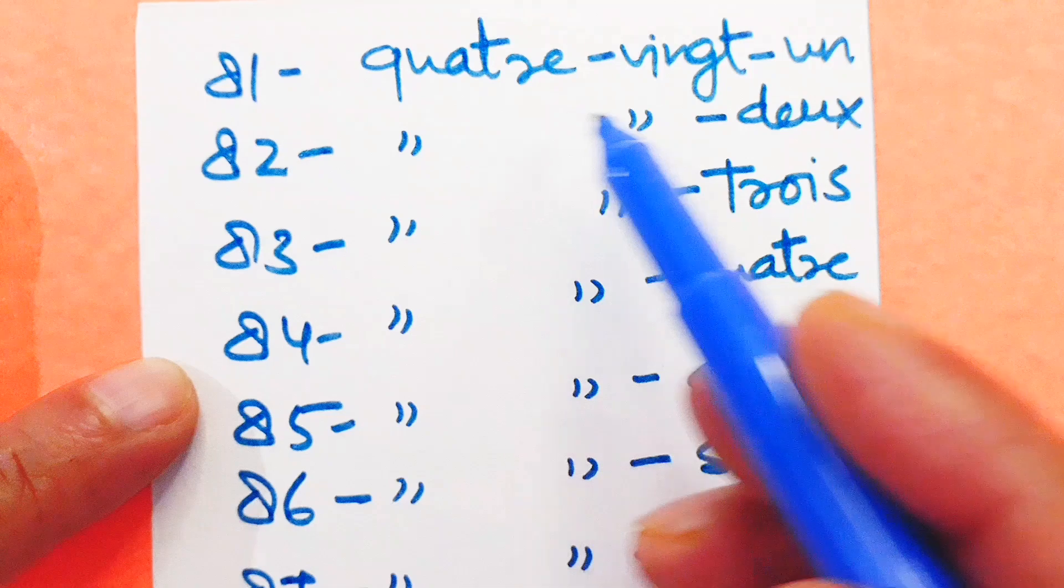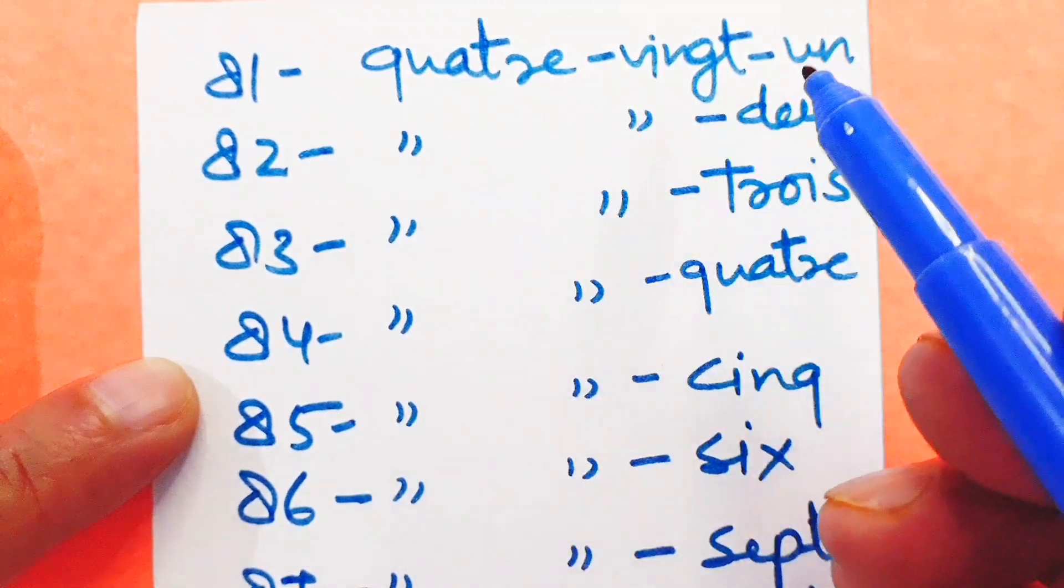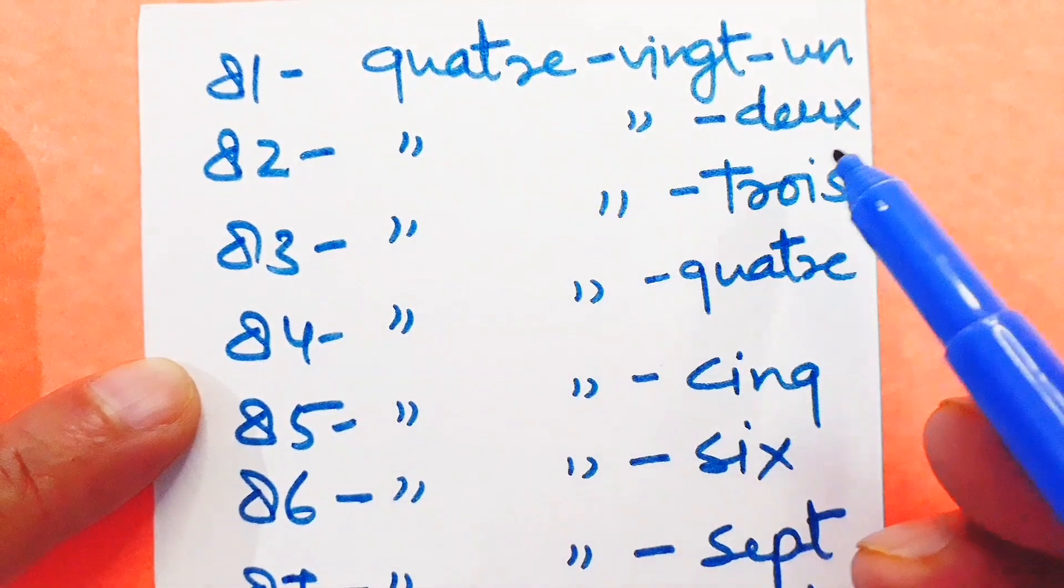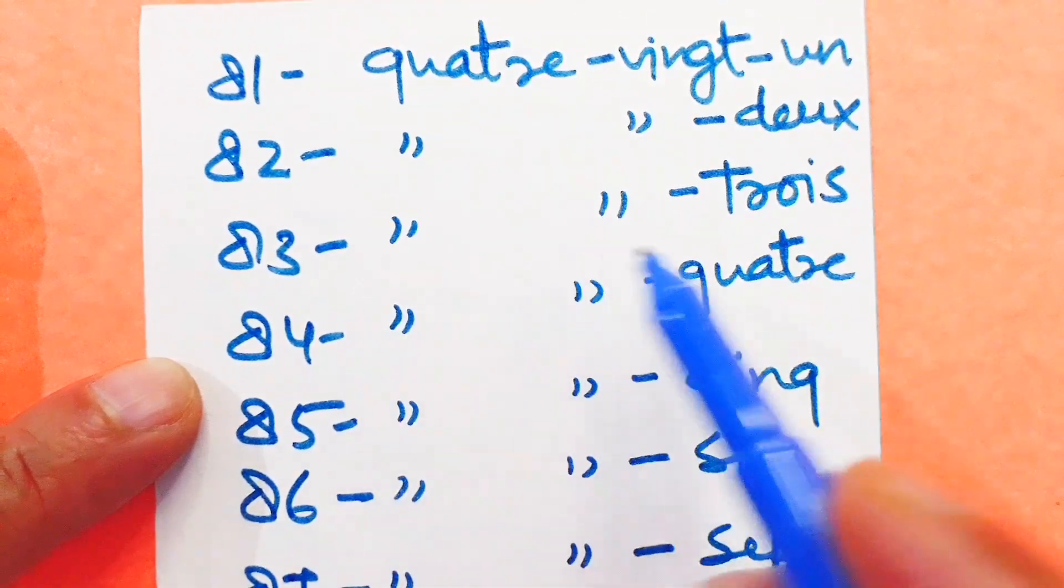Next, 81: Quatre-vingt-un. 82: Quatre-vingt-deux. 83: Quatre-vingt-trois.